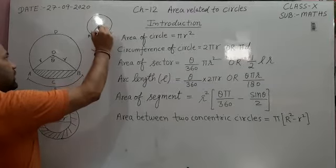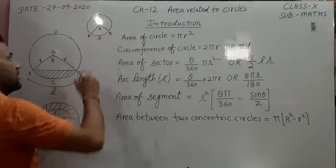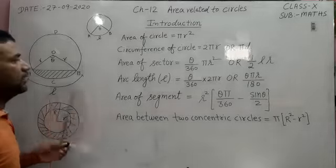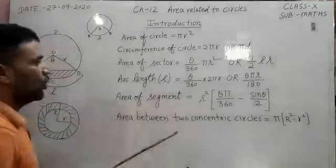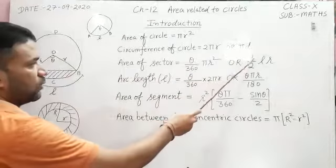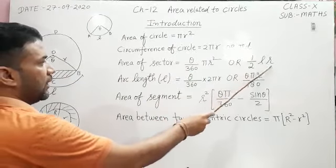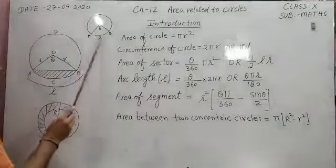Then area of sector is θ/360 × πr², or we can use other formula: 1/2 × l × r, where l is the arc length, that is AB.